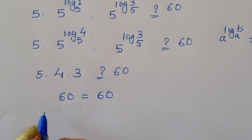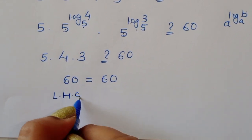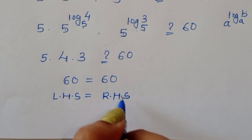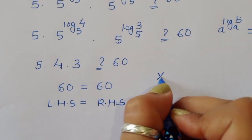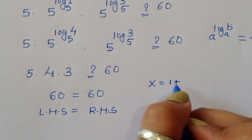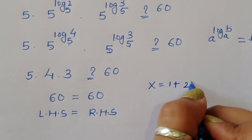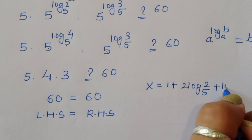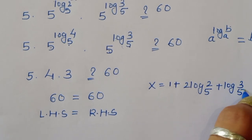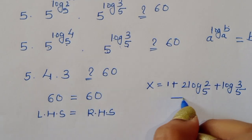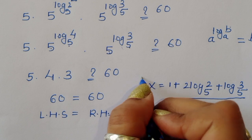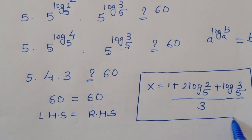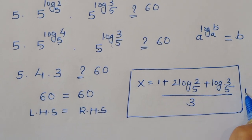So 5 times 4 is 20, times 3 is 60. Therefore LHS equals RHS, and the value of x is equal to [1 + 2·log_5(2) + log_5(3)] / 3. This is the correct solution. Thank you.